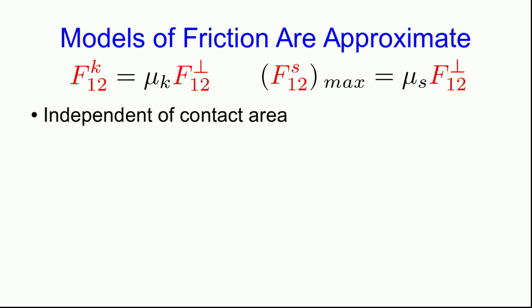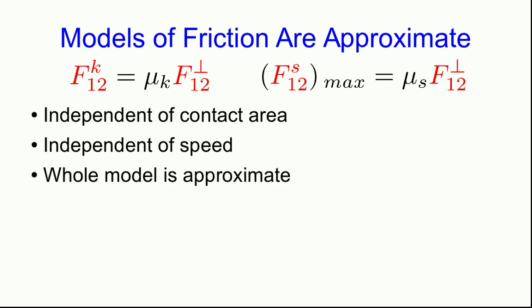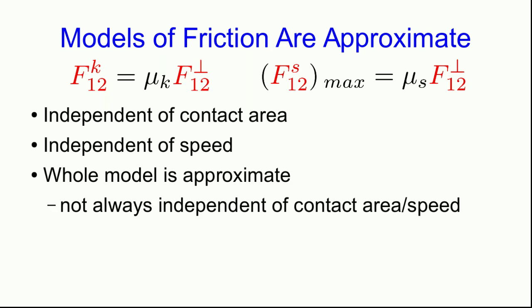One of the reasons I'm not putting more emphasis on this topic is that these models of friction are approximate. So we have these models that the kinetic friction is proportional to the perpendicular force by the same surface, and the proportionality constant is called a kinetic friction coefficient. And that the maximum static friction has a very similar formula with a static friction coefficient. And these are both independent of contact area. And I didn't say so, but also somewhat counterintuitively for most people, these forces are independent of speed. But this whole model is approximate. It holds approximately some of the time.